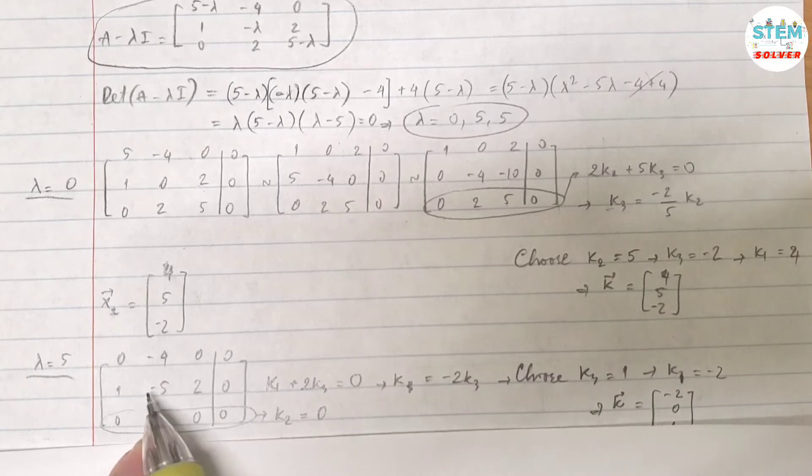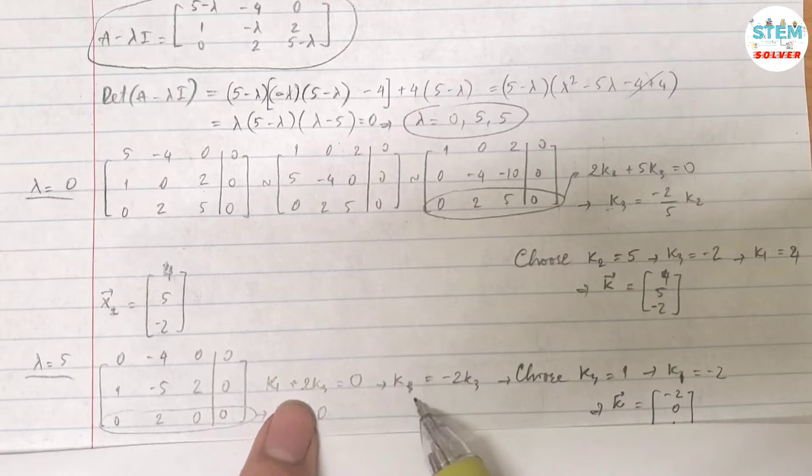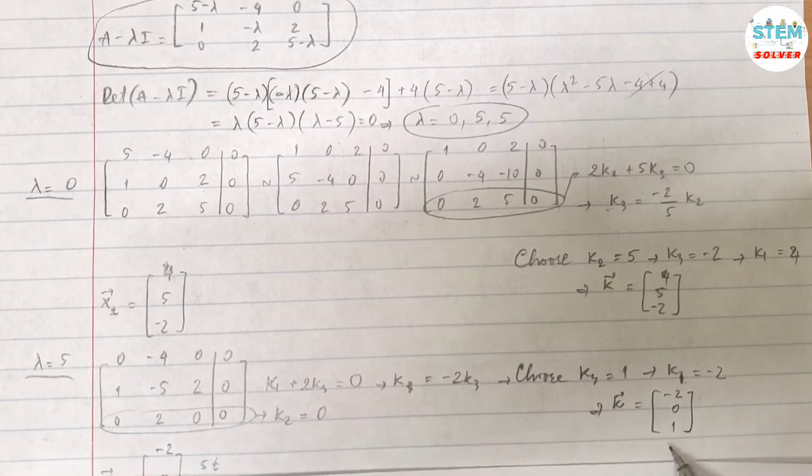Now use the second equation. You have K1 minus 5K2 plus 2K3 equals 0. Since K2 is 0, so just ignore it. So for K1, I got negative 2K3.